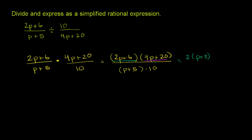And then 4p plus 20, both 4p and 20 are divisible by 4. So we can factor 4 out. So times 4 times p plus 5, times p plus 5.